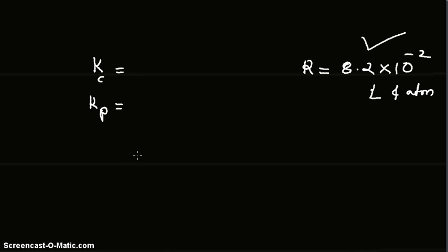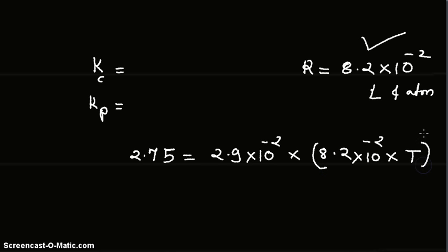Substituting these values we get 2.75, that is Kp, equals Kc which is 2.9 × 10^-2, times R that is 8.2 × 10^-2, times temperature T which we have to find, and this raised to delta n that is 1. And the answer is temperature equals 1.156 K, Kelvin.